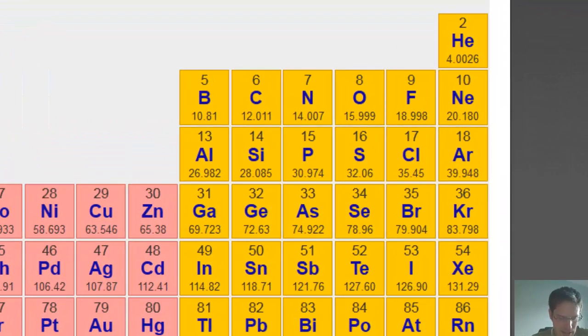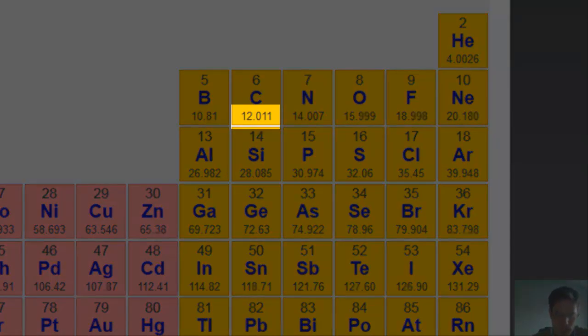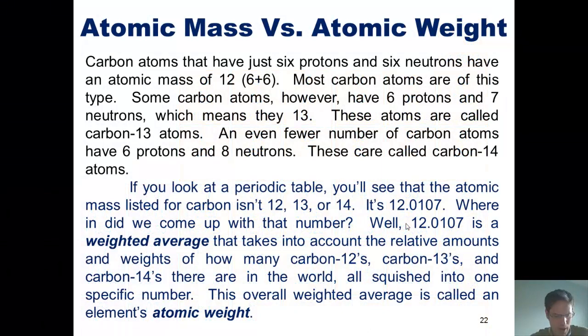you'll see that the atomic mass listed for carbon isn't 12, 13, or 14. It's 12.0107. And where in the world did we come up with that number?